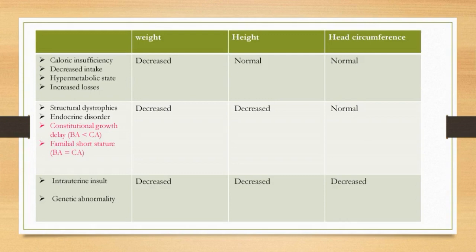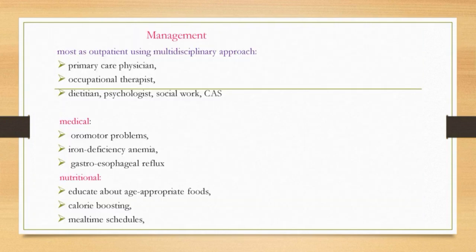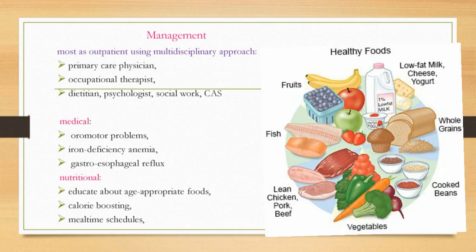To differentiate constitutional growth delay from familial short stature, look at bone age versus chronological age. In constitutional growth delay, bone age is less than chronological age. In familial short stature, bone age equals chronological age. In intrauterine growth abnormality, weight, height, and head circumference are all decreased.